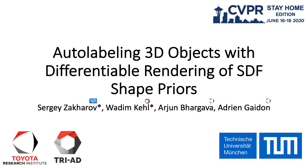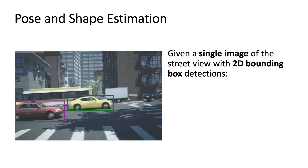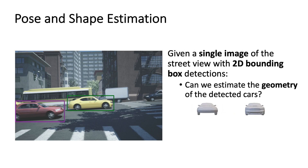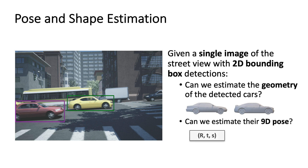In this work, we present an automatic annotation pipeline to recover 9D cuboids and 3D shapes from pre-trained off-the-shelf 2D detectors. Given 2D bounding box detections, we aim to answer two questions: First, can we estimate the geometry of the detected cars? And second, can we estimate their 9D pose consisting of rotation, translation and scale?